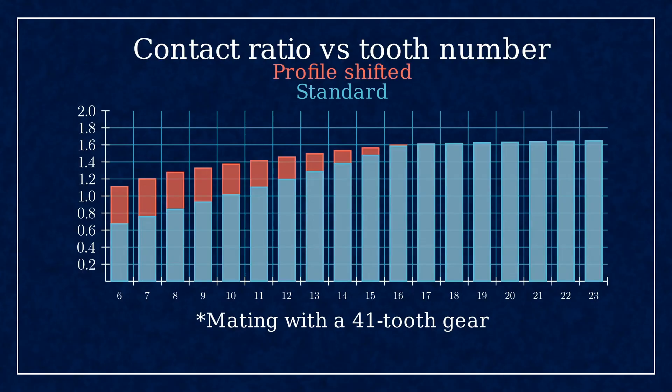So, without profile shift, 10 is the lowest you can go. While with profile shift, at least in theory, you can go as low as 6 teeth.